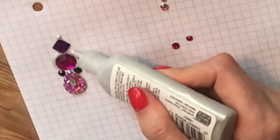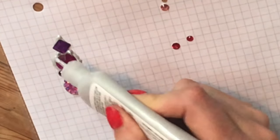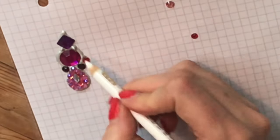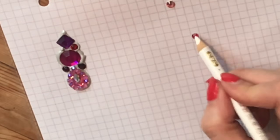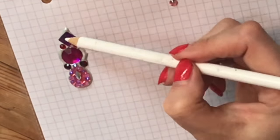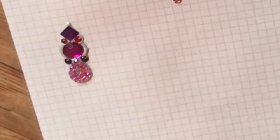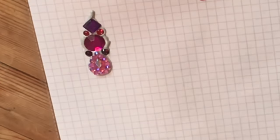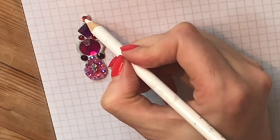It's important to keep checking that your gem cluster is all aligned. That's why this squared paper really helps, because when you put the gems down it does move a bit, so you just have to keep checking that it's all in one straight line.